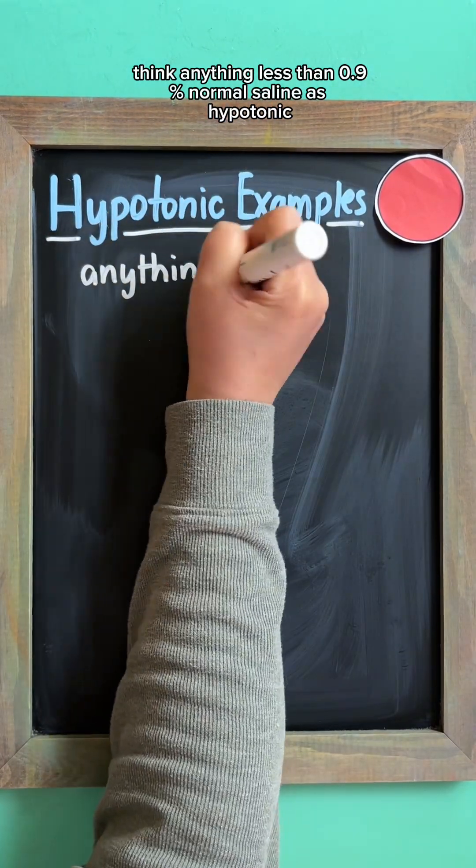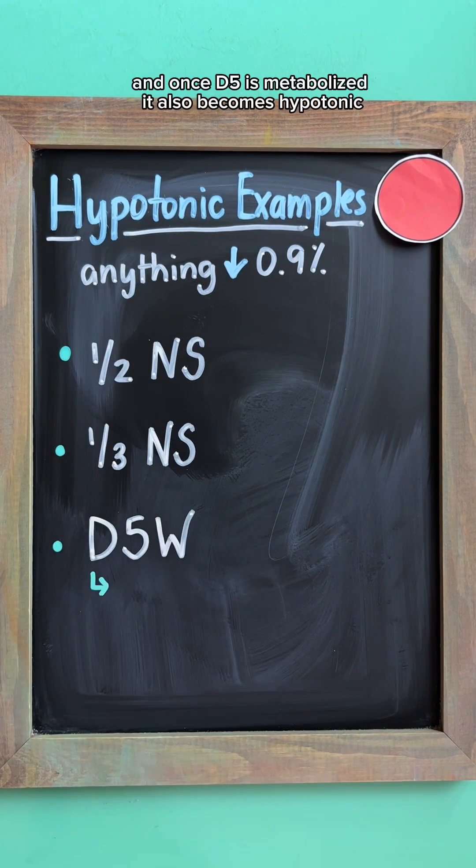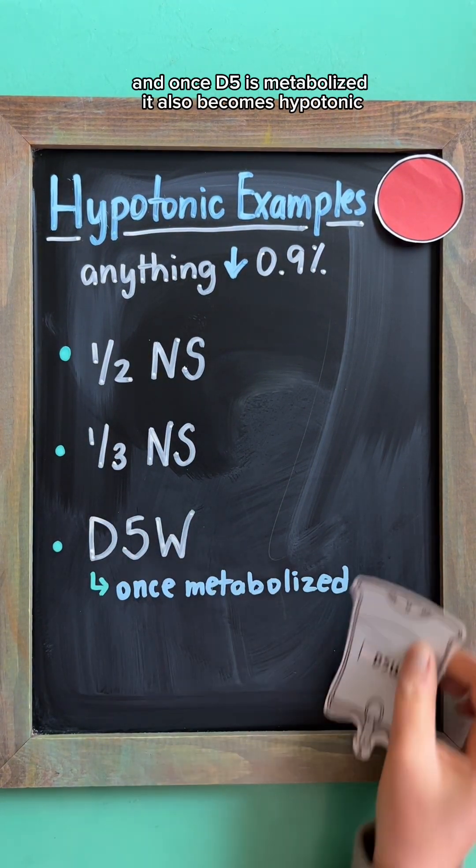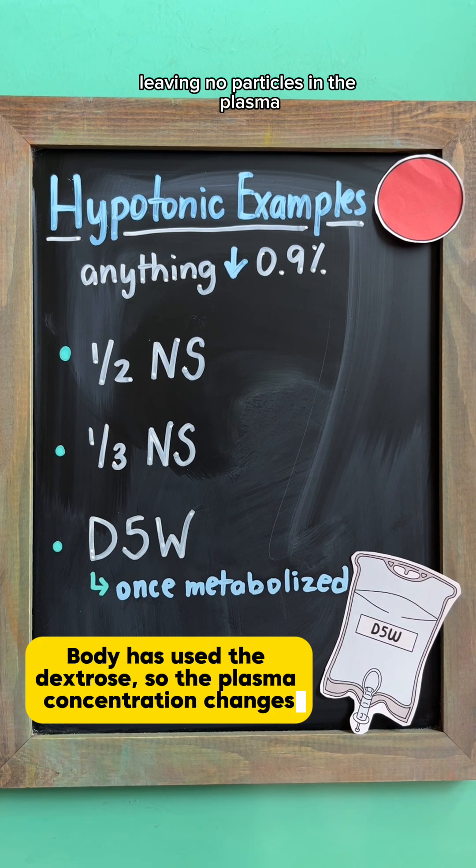Think anything less than 0.9% normal saline as hypotonic. So half NS, a third NS, and once D5 is metabolized, it also becomes hypotonic because the body has utilized the dextrose, leaving no particles in the plasma.